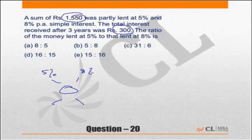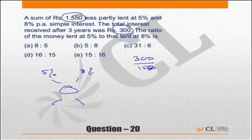But when you calculate that rate of interest — 300 upon 1550 — it is not an easy or straightforward number. It makes your calculation difficult.